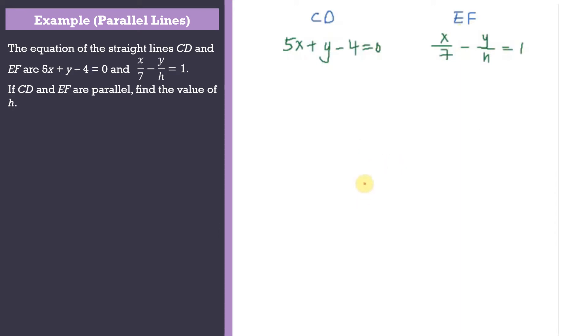In this question, given that CD is parallel to EF, remember if two lines are parallel then the gradient for CD should be equal to the gradient for EF. You can see here you can find the gradient directly for EF because it is in the intercept form.